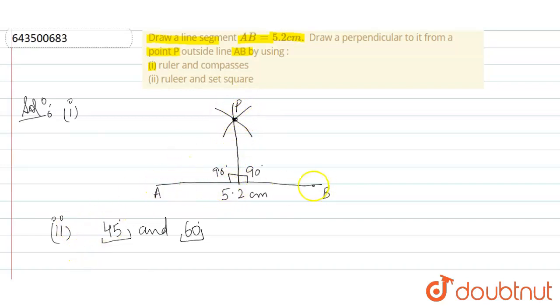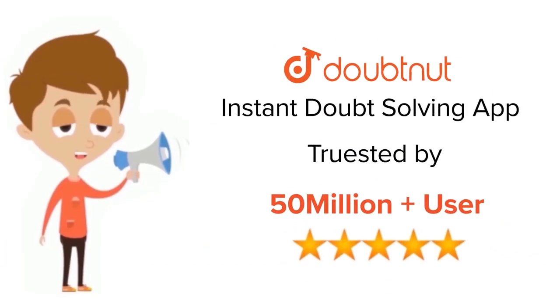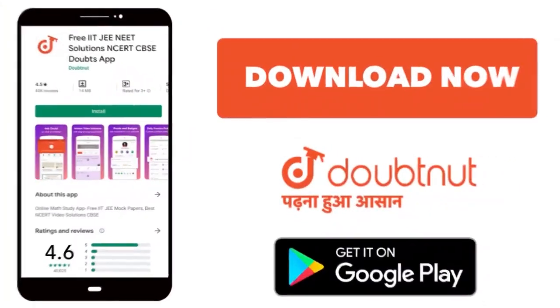This is the perpendicular on line AB from point P. For class 6th to 12th, up to IIT-JEE Mains and Advanced and NEET level, trusted by more than 5 crore students. Download Doubtnet app today.